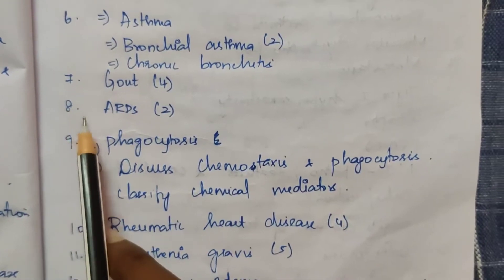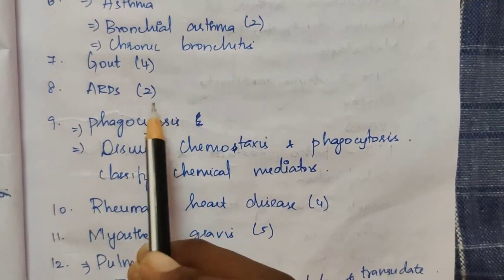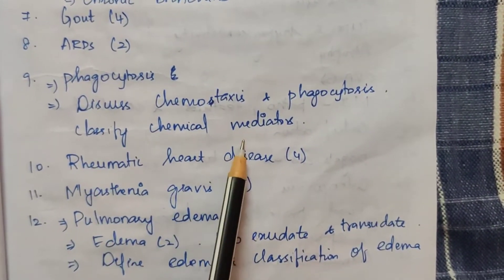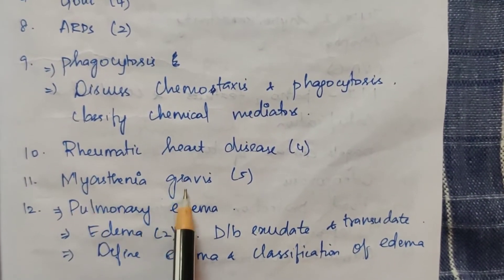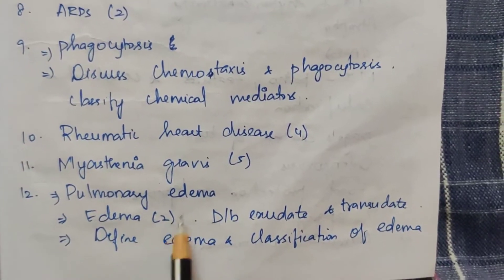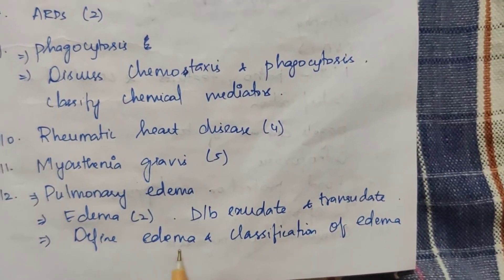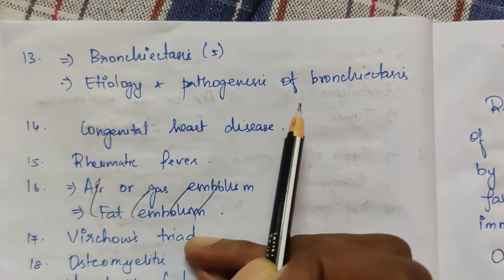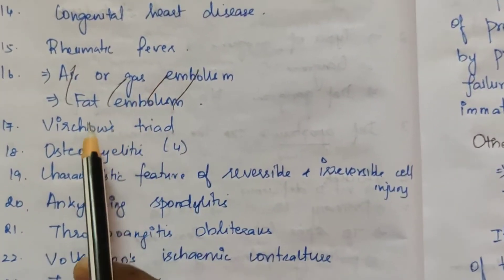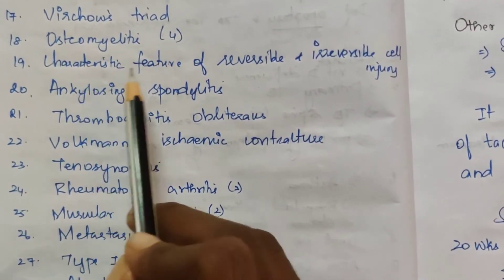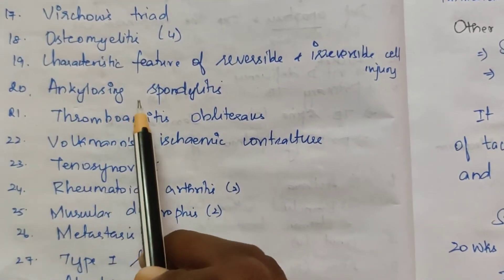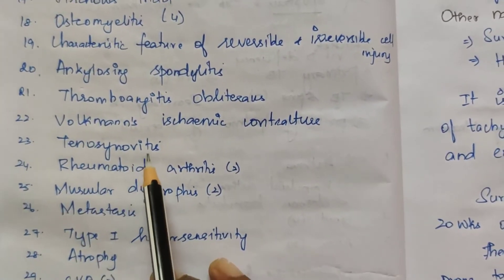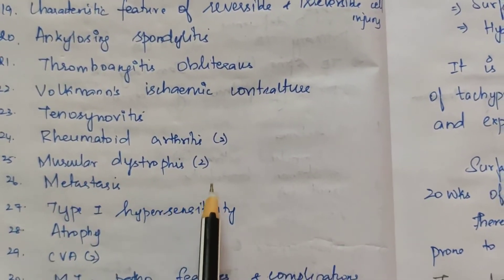Sixth: bronchial asthma and chronic bronchitis. Seventh: gout — appeared 4 times. Eighth: ARDS — acute respiratory distress syndrome — appeared 2 times. Ninth: phagocytosis — discuss chemotaxis and phagocytosis. Classify chemical mediators. Tenth: rheumatic heart disease — appeared 4 times. Eleventh: myasthenia gravis — appeared 5 times. Twelfth: pulmonary edema and edema — appeared 2 times. Differentiate between exudate and transudate. Define edema and classification of edema. Thirteenth: bronchiectasis — etiology and pathogenesis. Congenital heart disease, rheumatic fever, Virchow's triad, osteomyelitis, characteristic features of reversible and irreversible cell injury, ankylosing spondylitis, thromboangitis obliterans, Volkmann's ischemic contracture, tenosynovitis, rheumatoid arthritis, muscular dystrophies, metastasis.